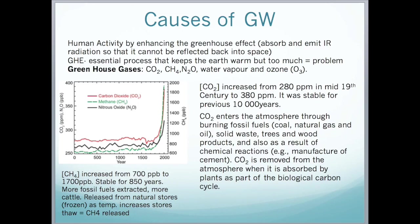Looking at the causes of global warming: human activity has been enhancing the greenhouse effect by producing greenhouse gases. Greenhouse gases absorb and emit infrared radiation, which means the infrared radiation cannot be reflected back into space but is instead reflected back to the surface of the Earth. The greenhouse effect is an essential process that keeps the Earth warm, but too much warmth creates a problem.